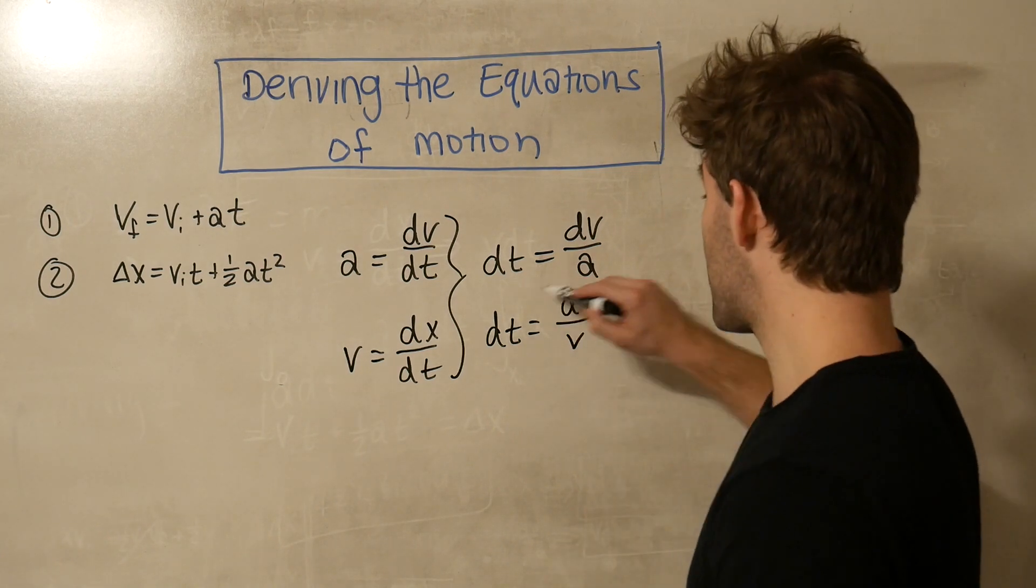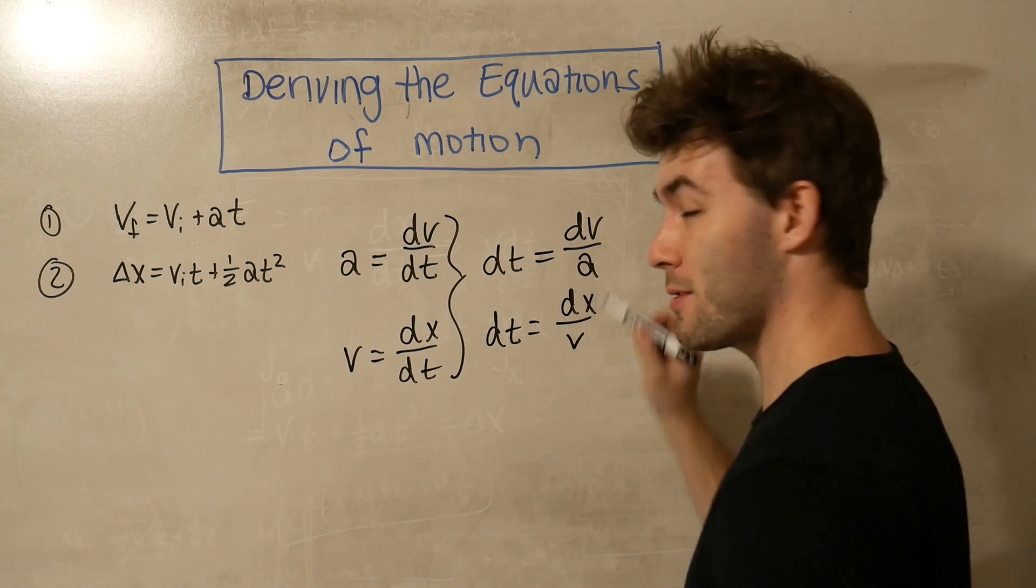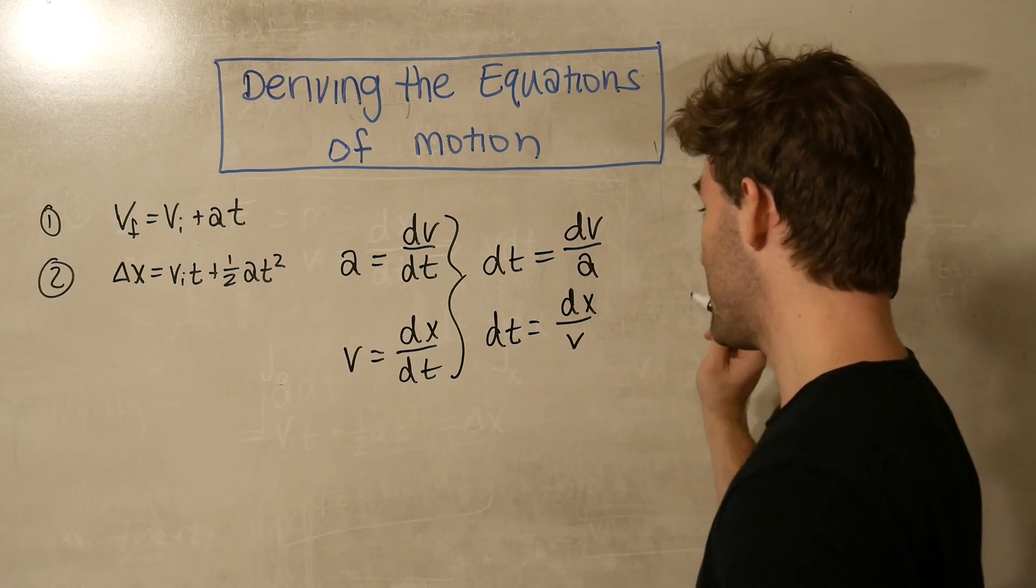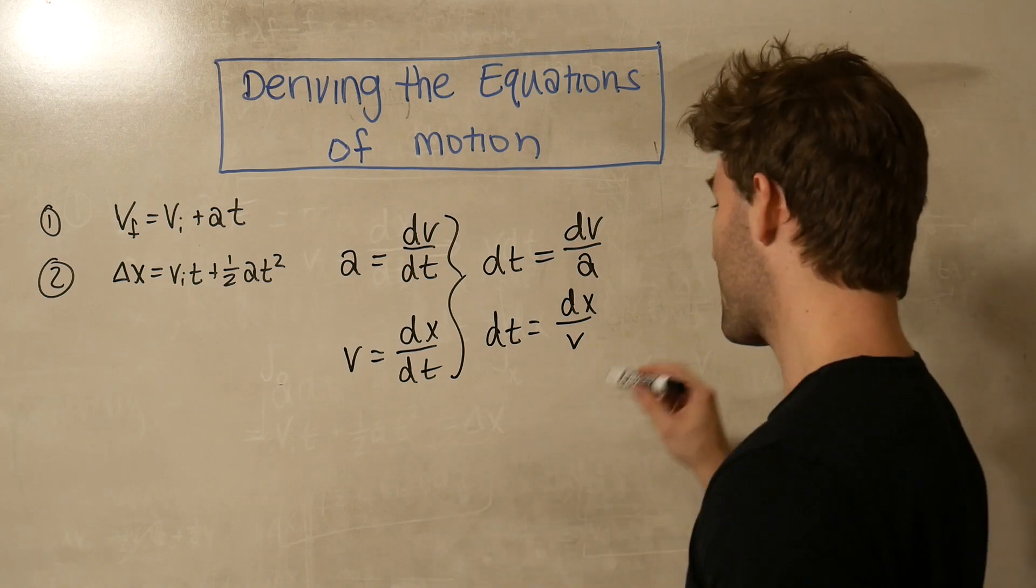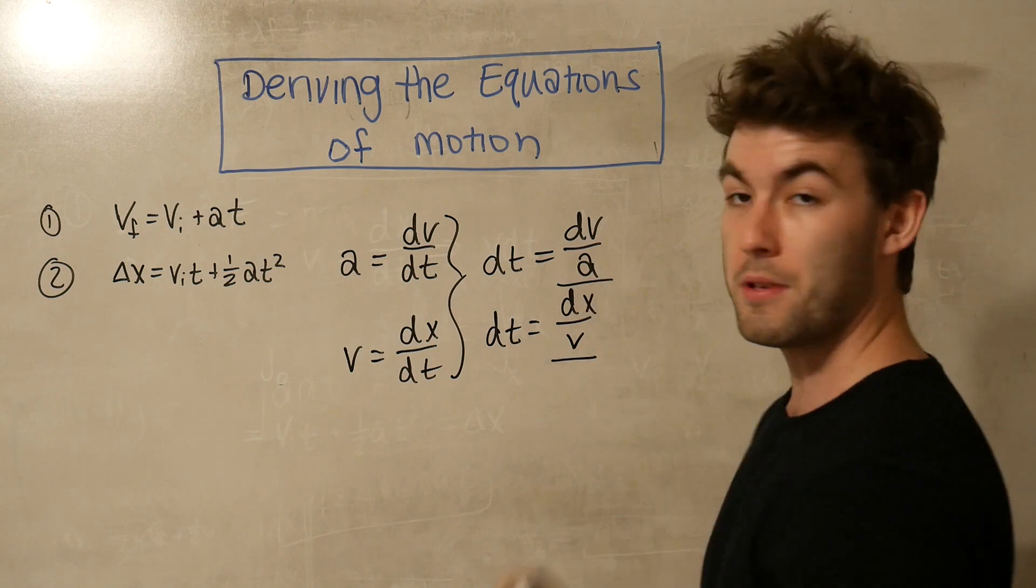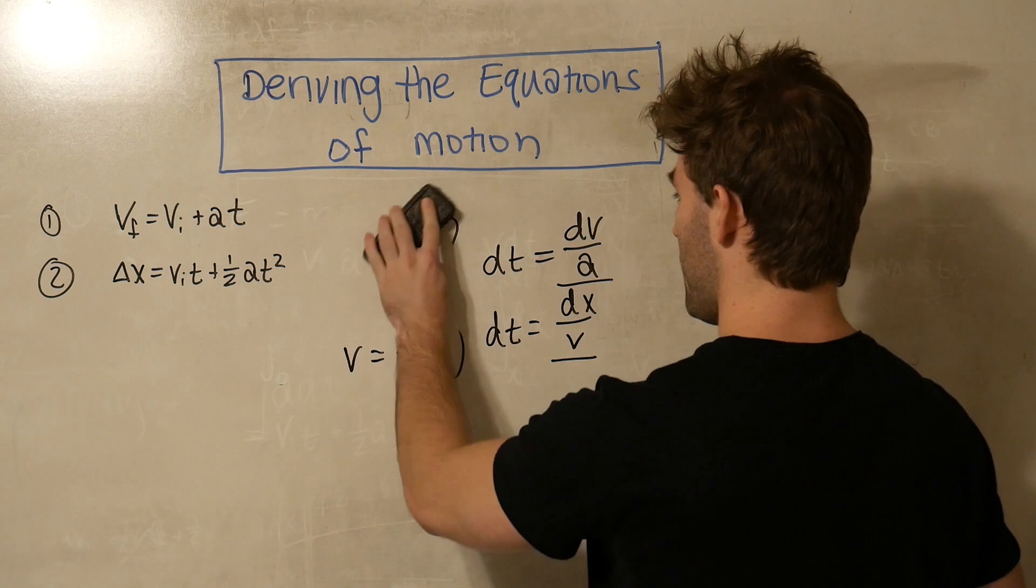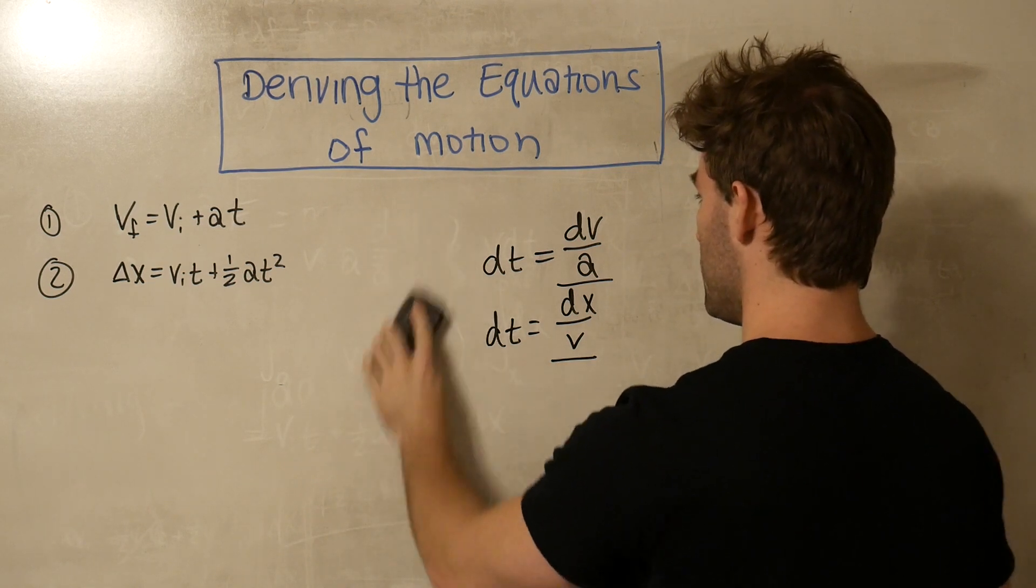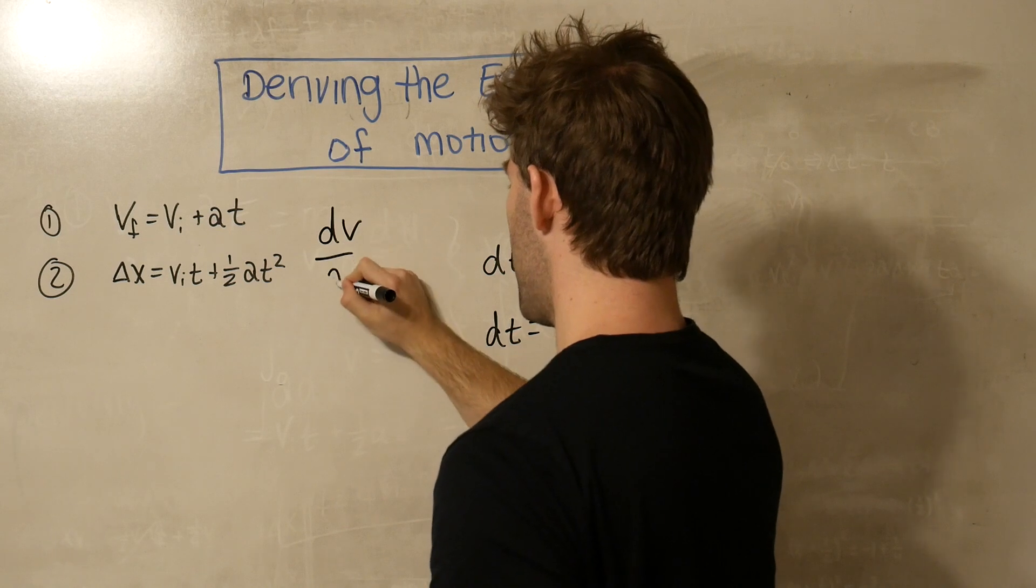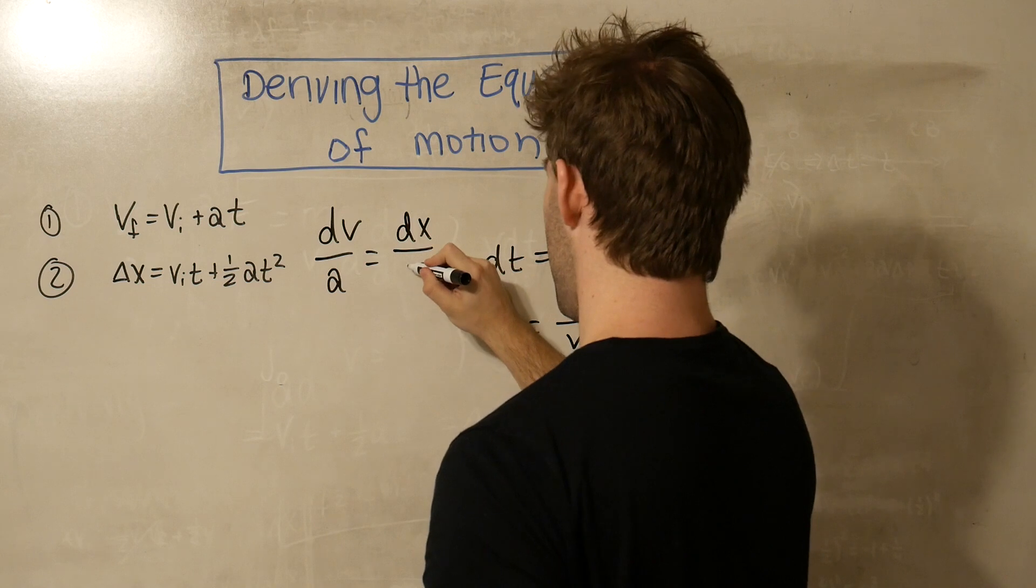Okay, so since we know that dt is defined as the differential change in velocity with respect to a constant acceleration, and it's also equal to a differential change in position with constant velocity, well that means that these two quantities must be equal to each other. So we're going to set them equal to each other. So if we get rid of this part, we can now say that dv over a is equal to dx over v.